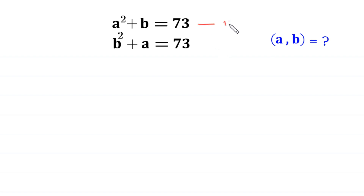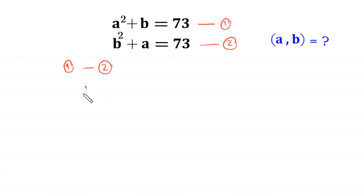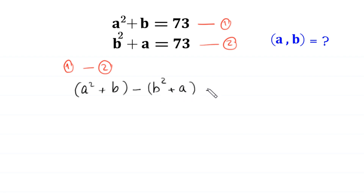We name this equation 1 and this equation 2. Now, from equation 1 we subtract equation 2. So, the left hand side of equation 1 is A squared plus B, minus the left hand side of equation 2, B squared plus A, is equal to the right hand side of equation 1, 73, minus the right hand side of equation 2, 73.